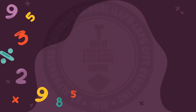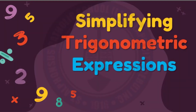In simplifying trigonometric expressions, you need to utilize the trigonometric identities. The basic rule in simplifying trigonometric expressions is to always modify the functions that are not sine and cosine. Some expressions require a few more steps in simplifying, while others do not.